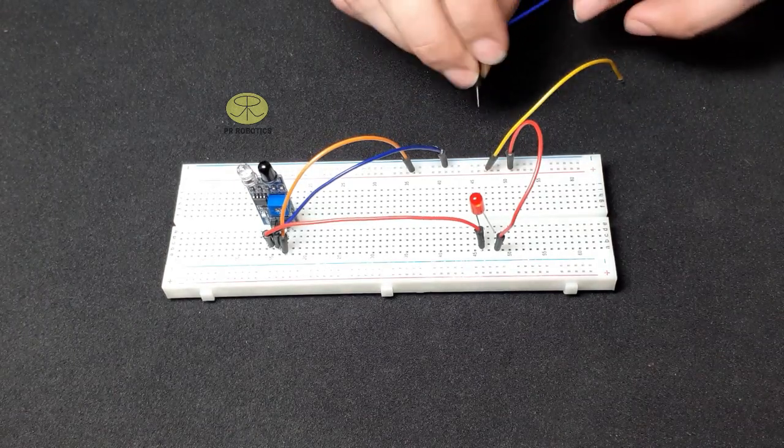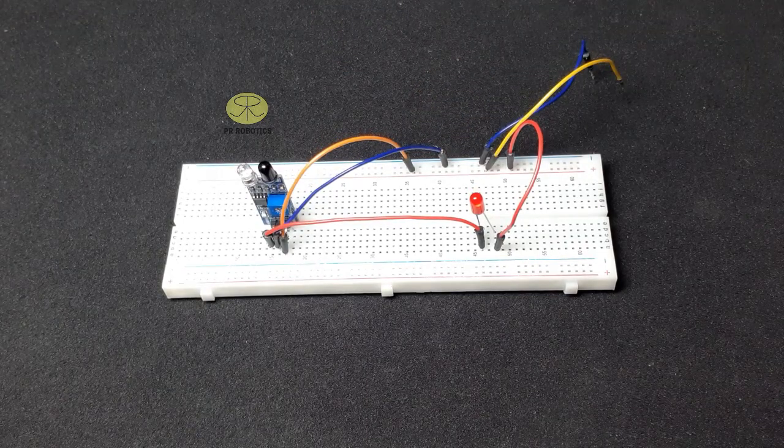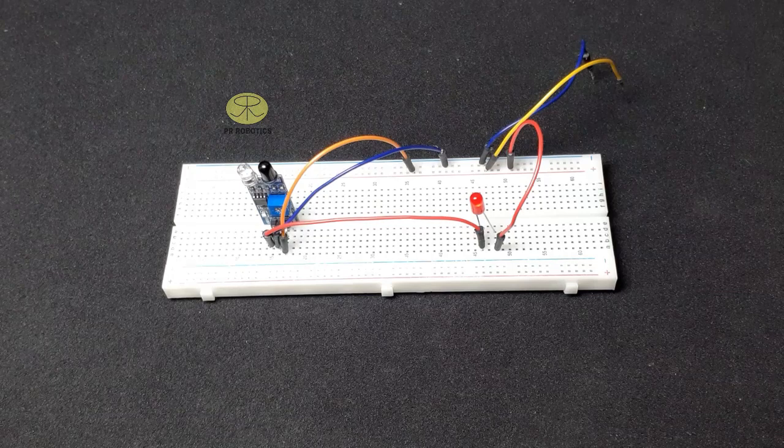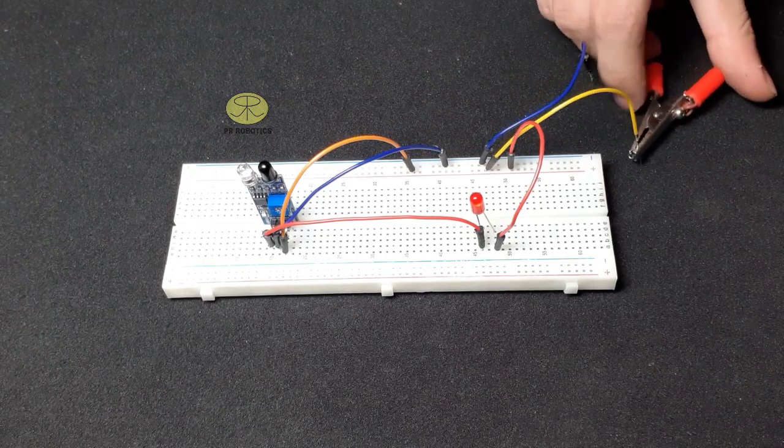Connect this wire to the positive rail and the other wire to the negative rail to supply 5 volt. Now connect 5 volt power source.